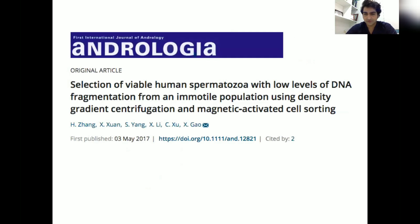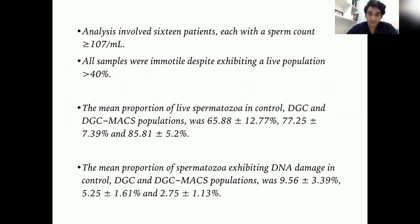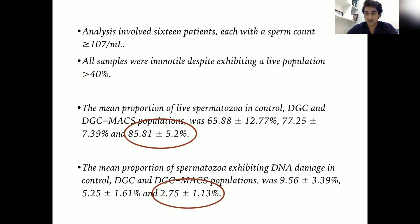Although no paper specifically comparing necrozoospermia with MACS was found, there is a paper discussing the role of MACS in immotile sperm. They used MACS with density gradient versus density gradient alone on samples with good concentration and viability around 40%. When MACS was combined with density gradient, they found higher viability in the outcome and a lower DNA fragmentation rate. So MACS can also be used when we have lower viability in the ejaculate.